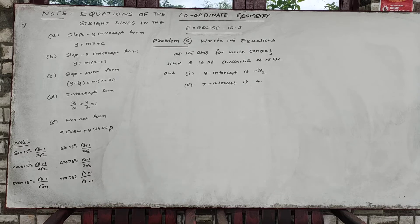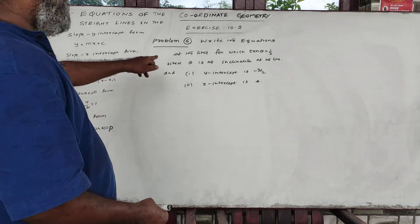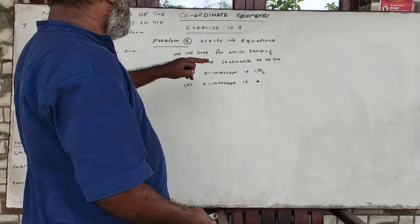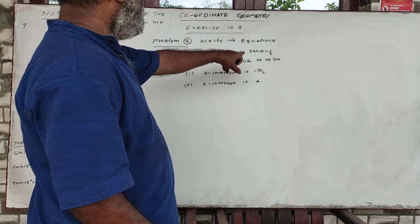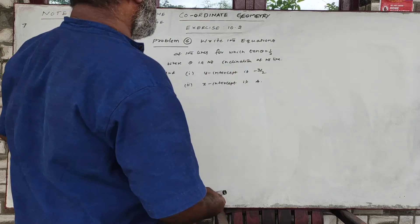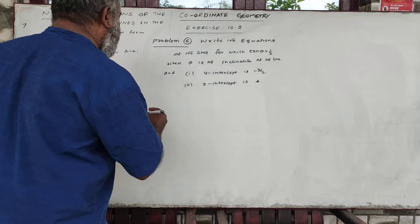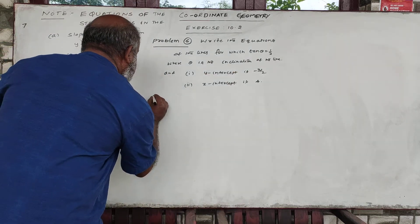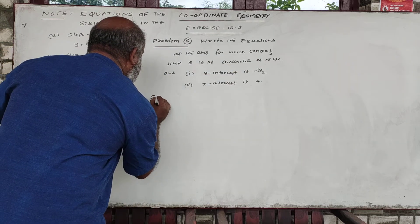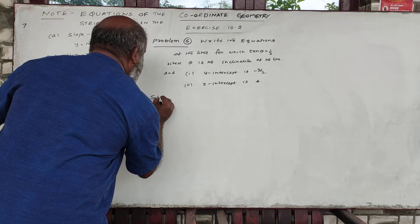Write the equation of the line for which tan theta equals half. Solution number three.